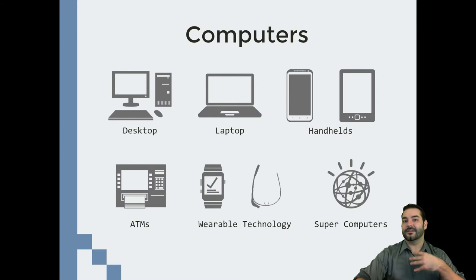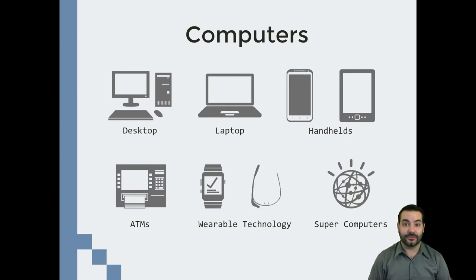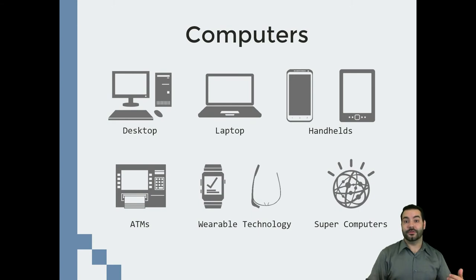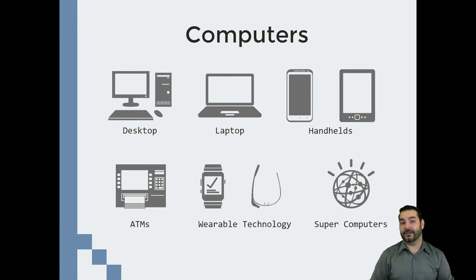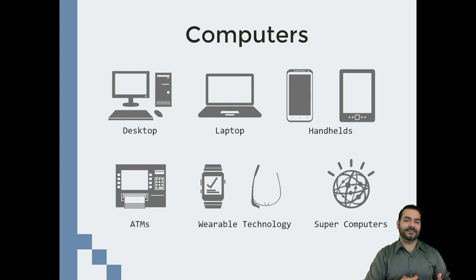But computers are starting to become everywhere. We're moving into something we call the Internet of Things. ATMs, self-checkout lines at the grocery store, kiosks — all of those are computers built for a sole purpose. We even have wearable technology nowadays where I can get a Fitbit, a Pebble, a smartwatch, or go to Under Armour and buy a chest piece that monitors my heart rate. We're starting to put them everywhere.